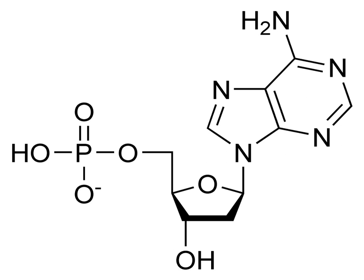Nucleotides are the building blocks of nucleic acids. They are composed of three subunit molecules: a nitrogenous base, a 5-carbon sugar (ribose or deoxyribose), and at least one phosphate group. A nucleoside is a nitrogenous base and a 5-carbon sugar; thus a nucleoside plus a phosphate group yields a nucleotide.